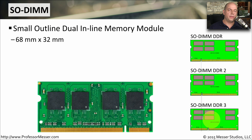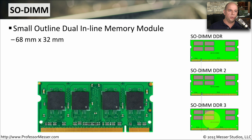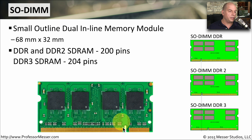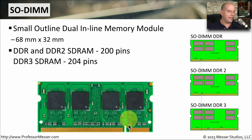If you're working with a laptop computer, you may need a SODIMM. When you get into mobile devices, we need a smaller form factor, so we've taken the idea of a DIMM and collapsed it into a small outline dual inline memory module. These are relatively small to fit in mobile devices. For DDR and DDR2, there are 200 pins, and for DDR3 SDRAM there are 204 pins. It fits into form factors about 68 millimeters wide for mobile and laptop devices.